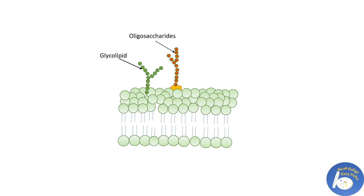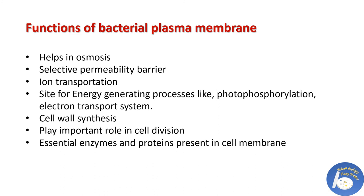And now, functions of bacterial plasma membrane. It helps in osmosis. It acts as selective permeability barrier. It helps in ion transportation. It is a site for energy generating processes like photophosphorylation and electron transport system. It helps in cell wall synthesis. It plays important role in cell division. It has essential enzymes and proteins.